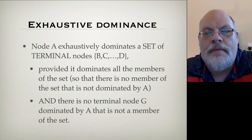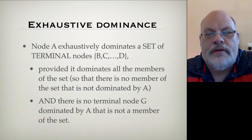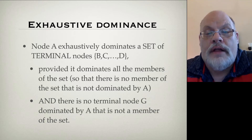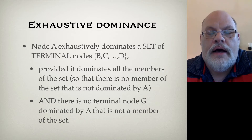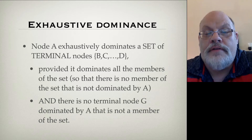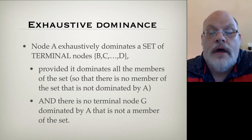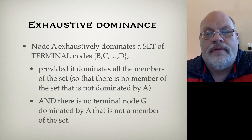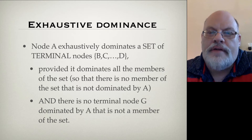Let's talk about a couple of other kinds of dominance. First, exhaustive dominance. This is a tricky definition because exhaustive dominance is about sets of terminal nodes — those are the nodes at the bottom of the tree. It deals with sets, so you look at all members of the set, and it only ever applies to terminal nodes, never non-terminal nodes. A node exhaustively dominates a set of nodes provided it dominates all the members of that set, and there's no terminal node dominated by A that's not a member of the set. This gives us a definition for constituent.